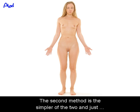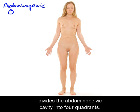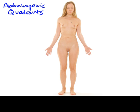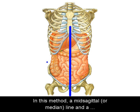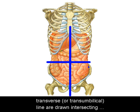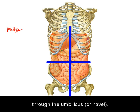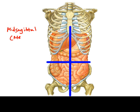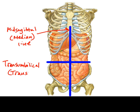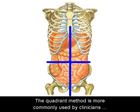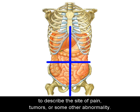The second method is the simpler of the two and just divides the abdominopelvic cavity into four quadrants. In this method, a mid-sagittal or median line and a transverse or trans-umbilical line intersect through the umbilicus, or navel. The quadrant method is more commonly used by clinicians and patients to describe the site of pain, tumors, or some other abnormality.